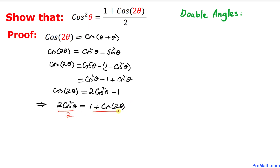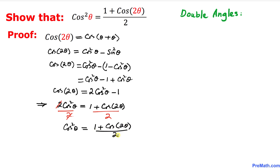Now let's divide both sides by two. The two on the left hand side cancels, and we simply get cosine squared theta equals one plus cosine of two theta divided by two.